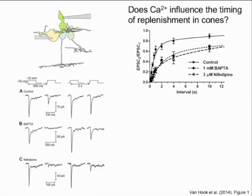In the second, we bath applied a low concentration of the L-type calcium channel blocker nifedipine to slightly reduce calcium influx. Doing this had a similar effect to BAPTA, reducing the amplitude of the fast recovery process.